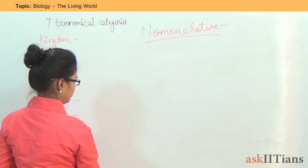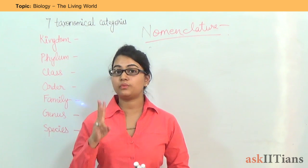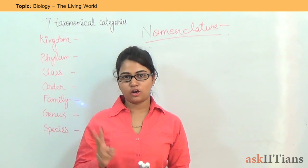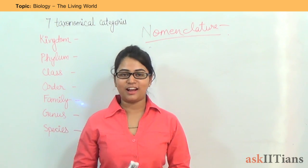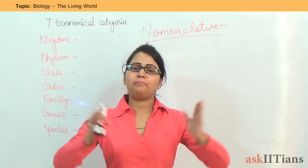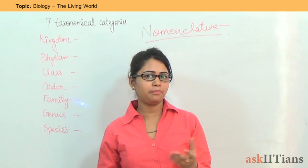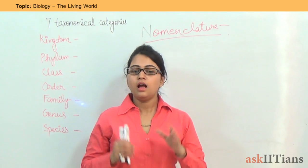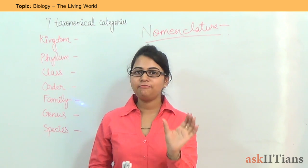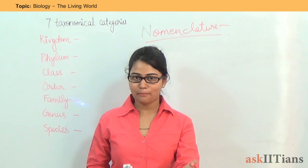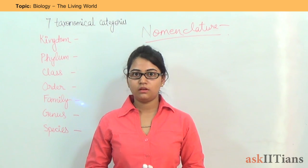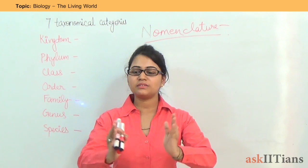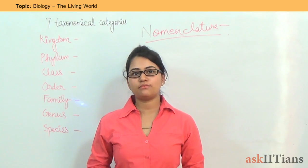There are three types of nomenclature: polynomial nomenclature, binomial nomenclature, and trinomial nomenclature. Polynomial nomenclature is the old one. Under this system, you have to give a very long name to a plant or organism. For example, if you have to name a red rose, in polynomial nomenclature you would call it 'a flower with red petals and green sepals having thorns in its stem.' In order to give a name to a plant, you had to list all its characteristics, so this system was not accepted.